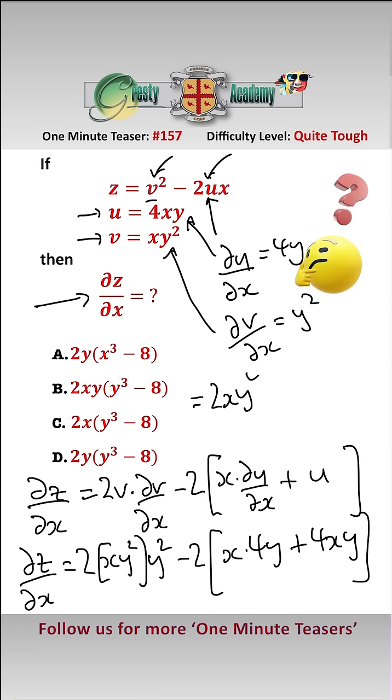that gives us 2xy to the 4, minus 16xy, which we can take out the factors, giving us 2xy y cubed minus 8, which is answer b.